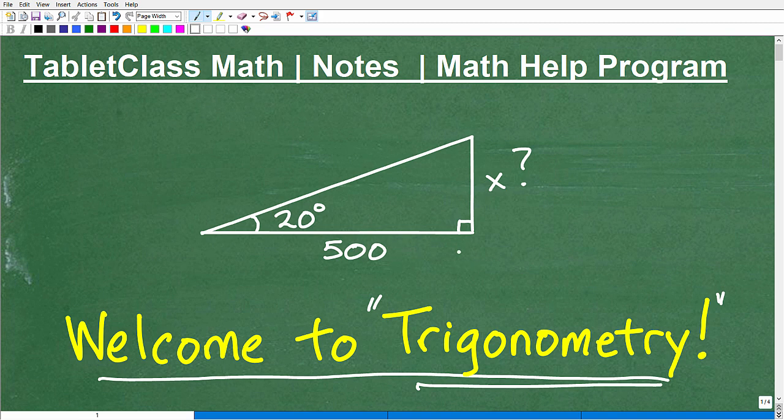So we're looking at this triangle, okay, and we want to know the height, this leg of this triangle. So over here, we're told this is 20 degrees and this leg of this triangle is 500. Now, if we didn't have trigonometry, we could not determine the length of this leg of this triangle. There's no way to do that.